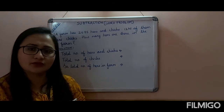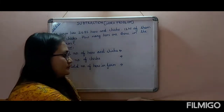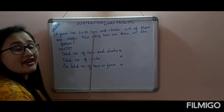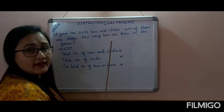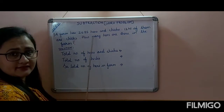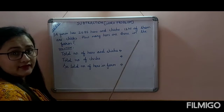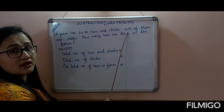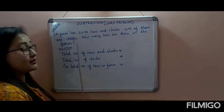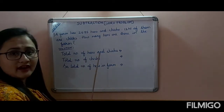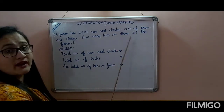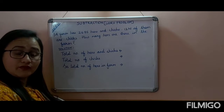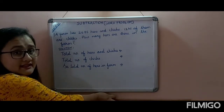Now look at the board. It is written: a farm has 2695 hens and chicks. So there are 2695 hens and chicks in total. Out of that, 1241 of them are chicks. You are asked to find out how many hens are there in the farm. So you have to find out how many hens there are out of 2695, which means we have to subtract.